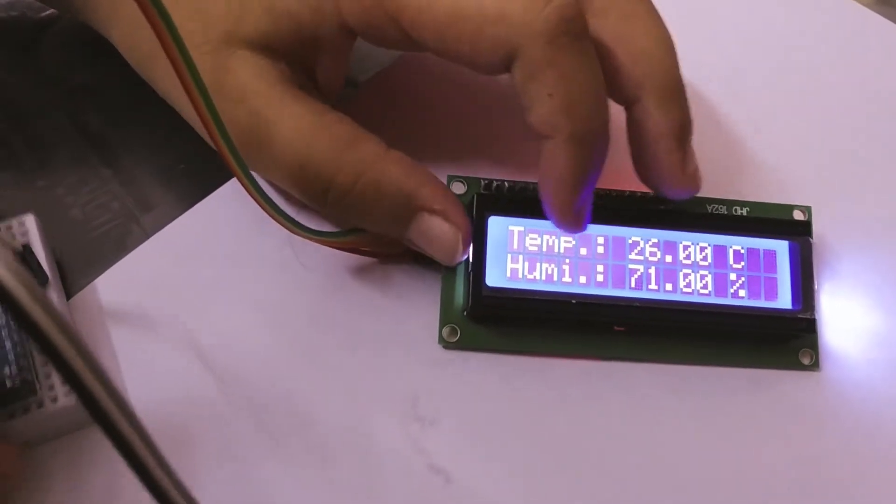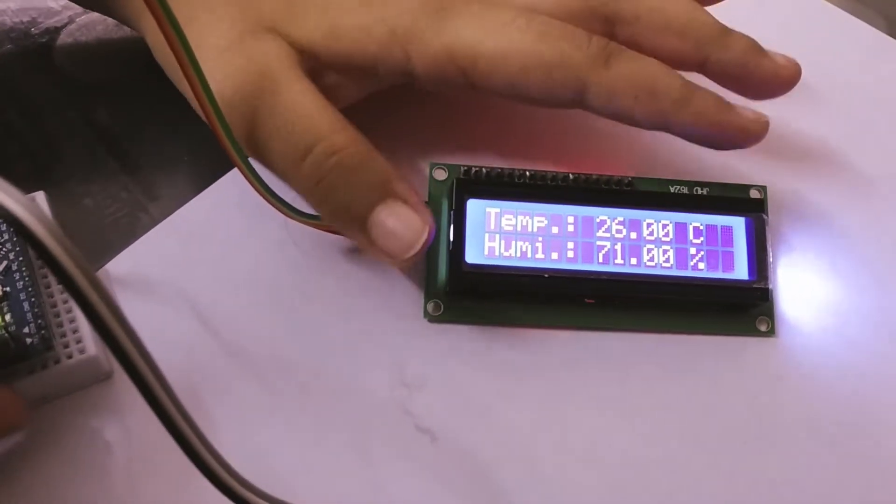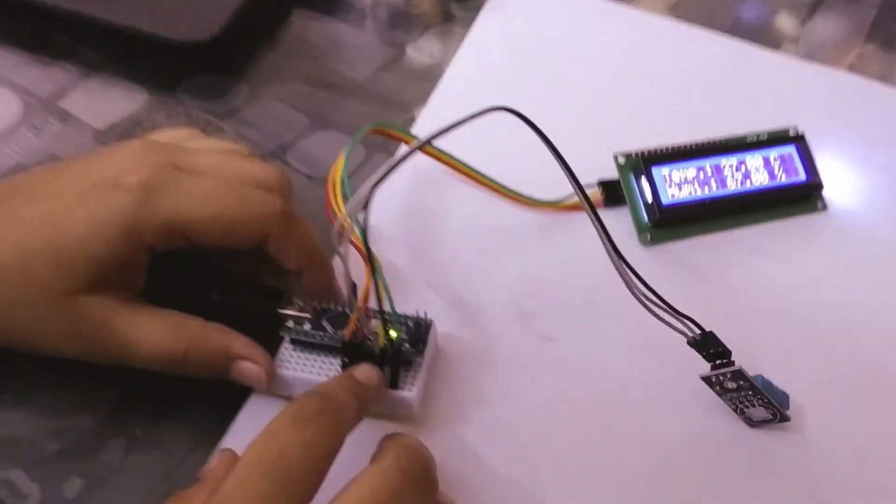The temperature is 26 Celsius and humidity is 71 percent. You can just put it in a packet something like this.